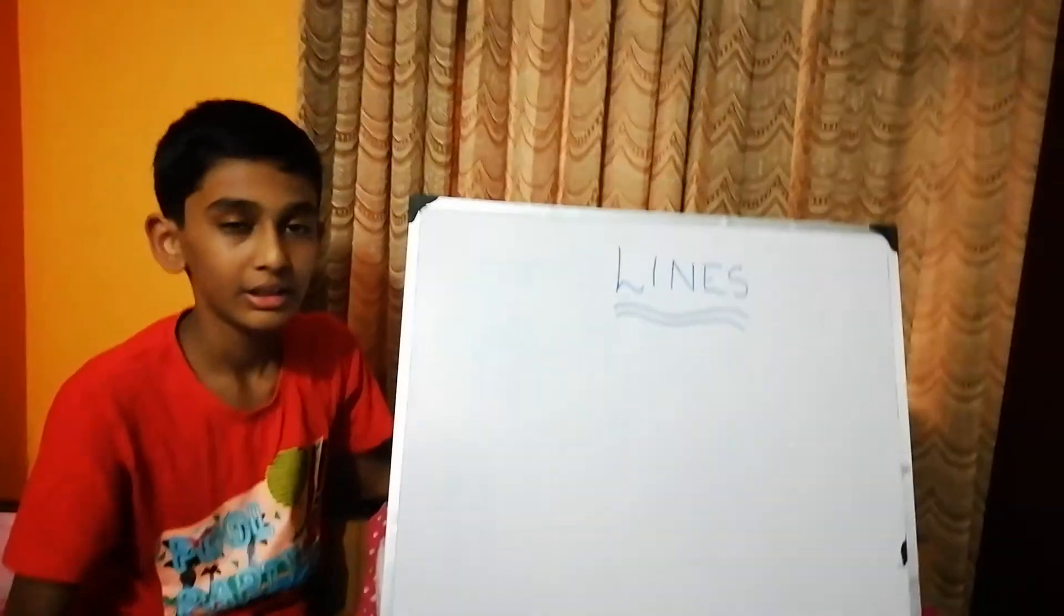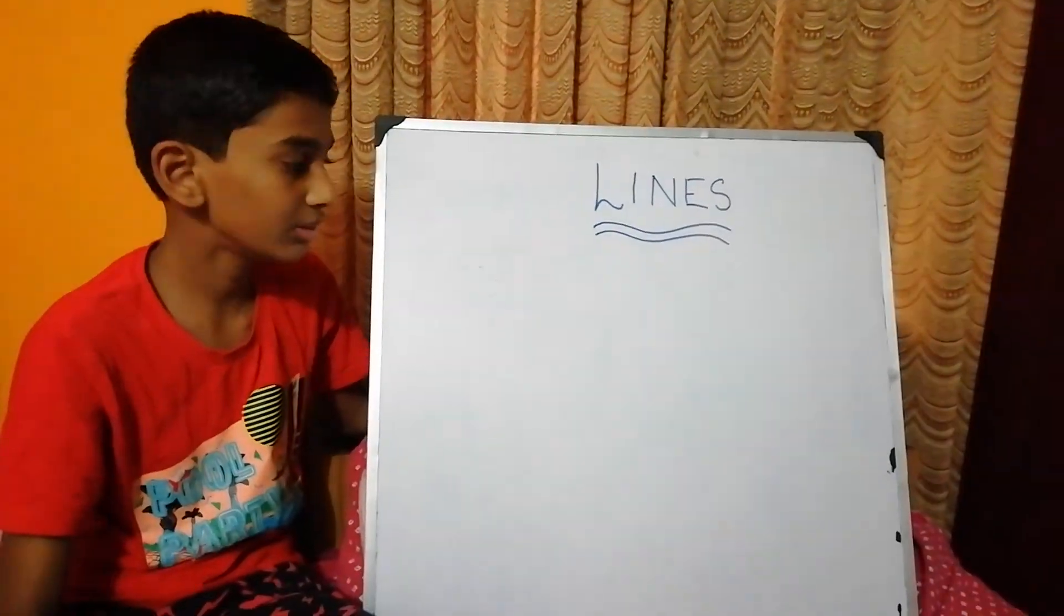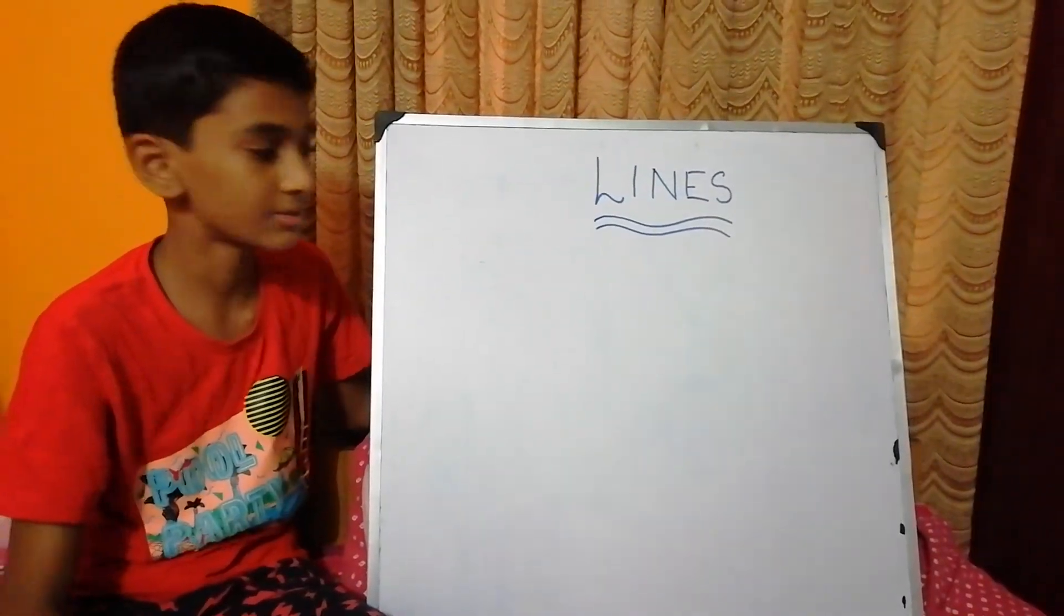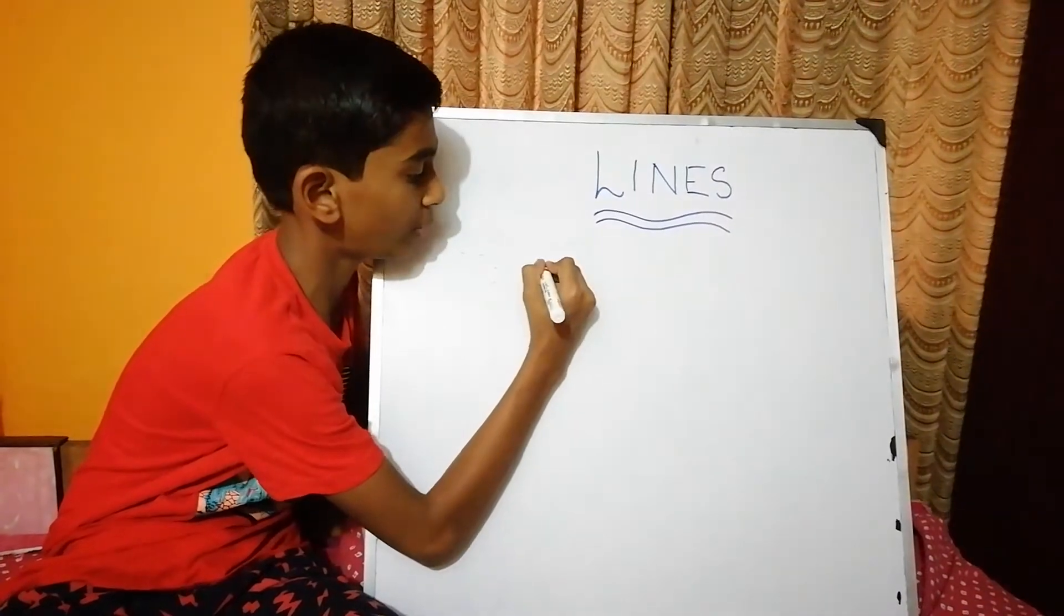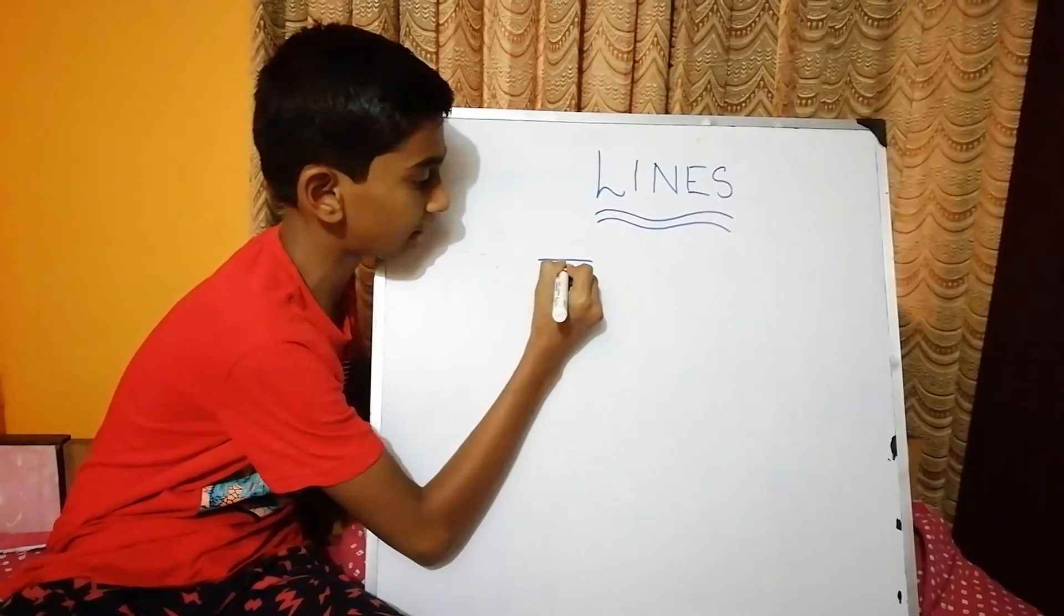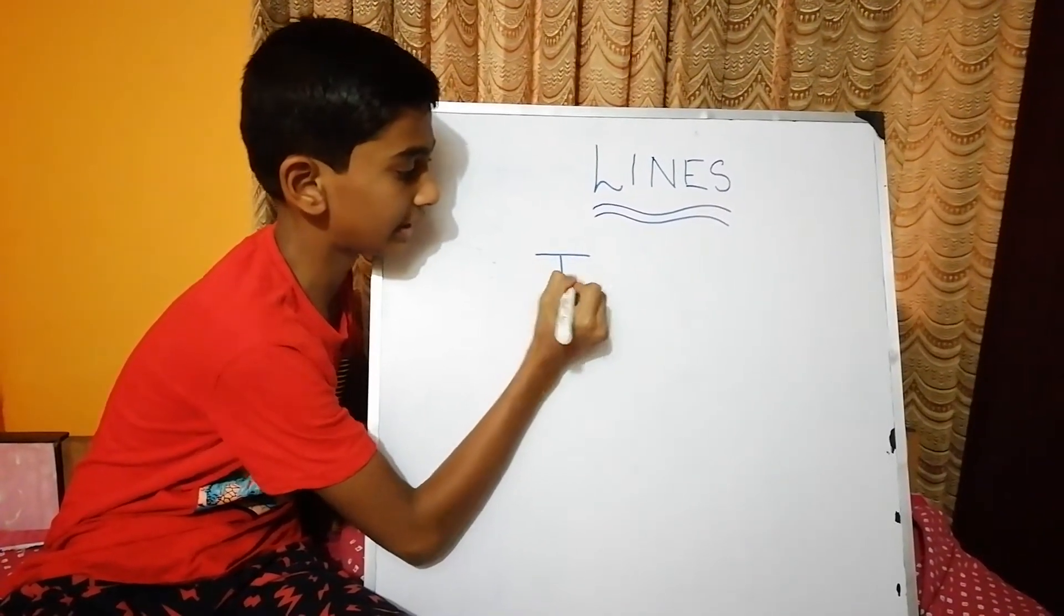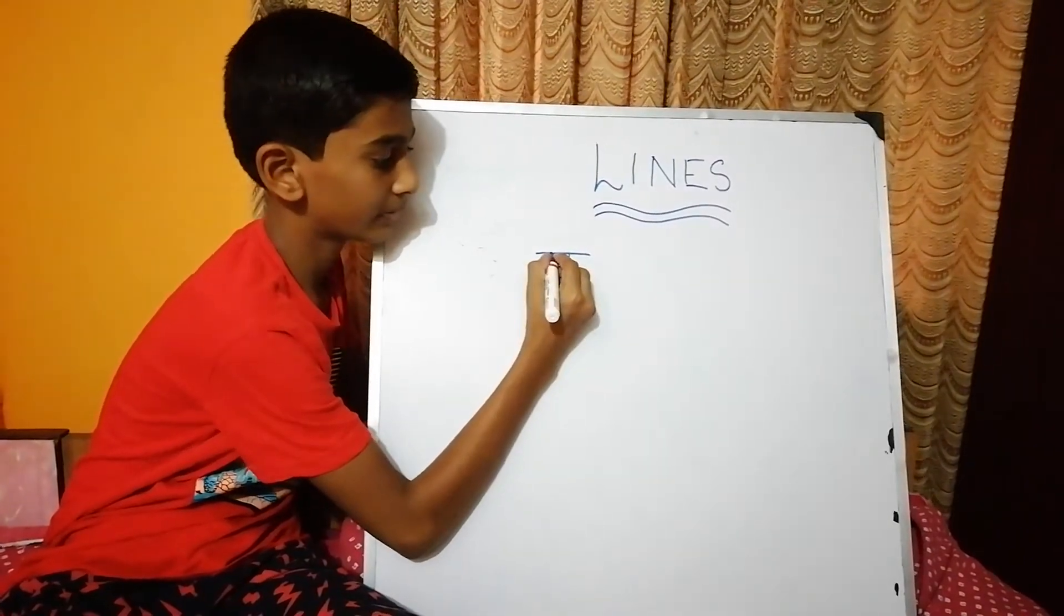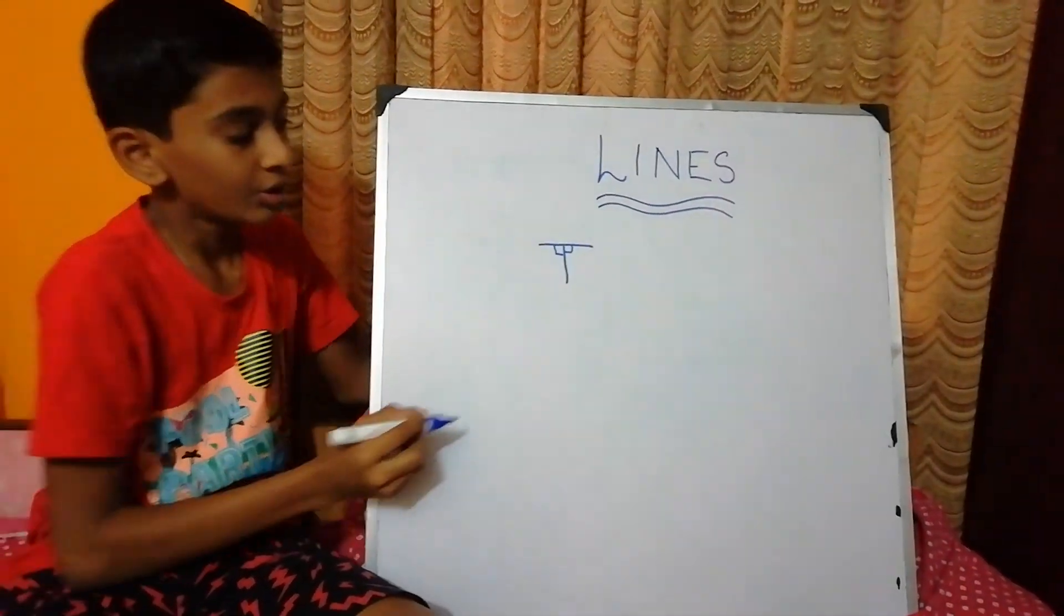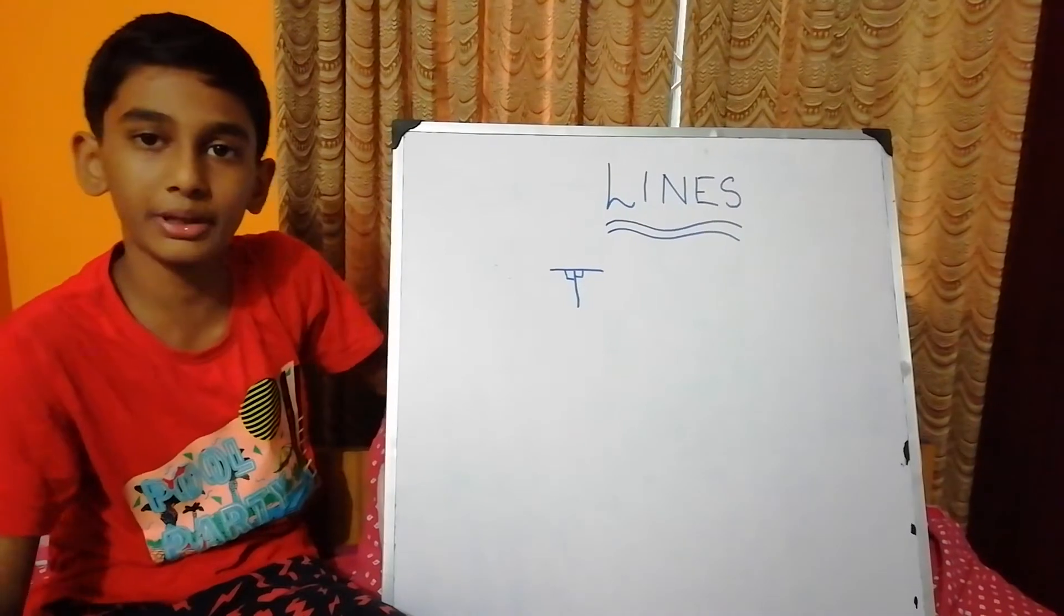The fifth type is perpendicular lines. Perpendicular lines intersect themselves at 90 degree. So, these are perpendicular lines.